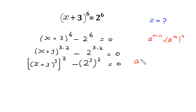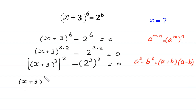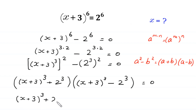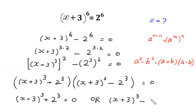Now, by using the algebraic identity a squared minus b squared equals (a + b)(a − b), this expression becomes: [(x + 3)³ + 2³] times [(x + 3)³ − 2³] equals 0. So either (x + 3)³ + 2³ = 0, or (x + 3)³ − 2³ = 0.